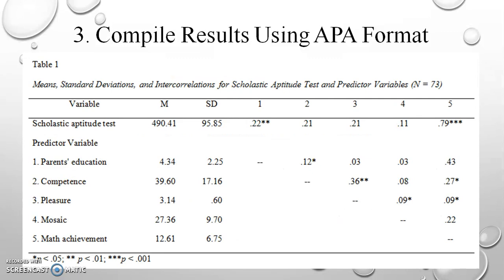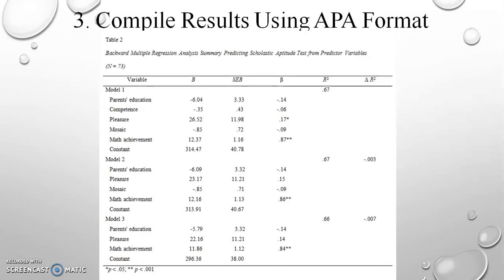Table one shows the means, standard deviations, and correlations for the variables, and was referenced in the APA write-up. Table two provides a summary of backward multiple regression for all the models, and was also referenced in our APA write-up of the results.